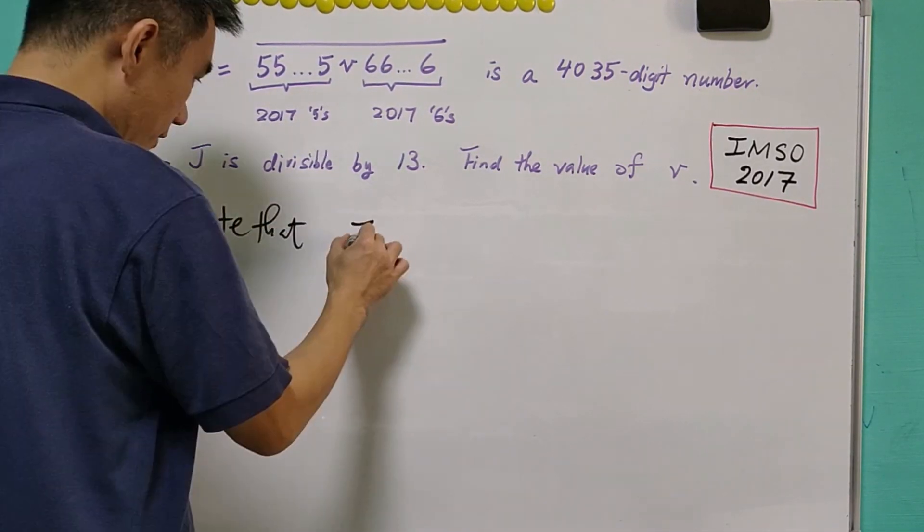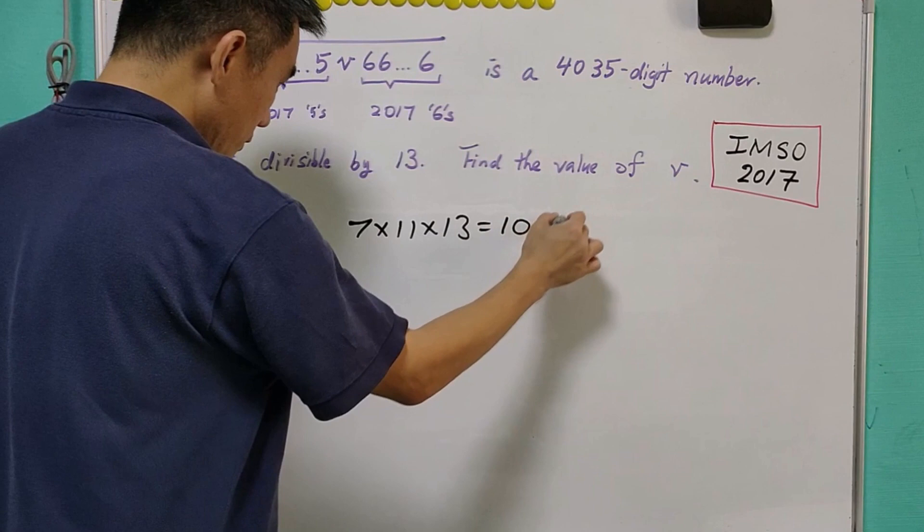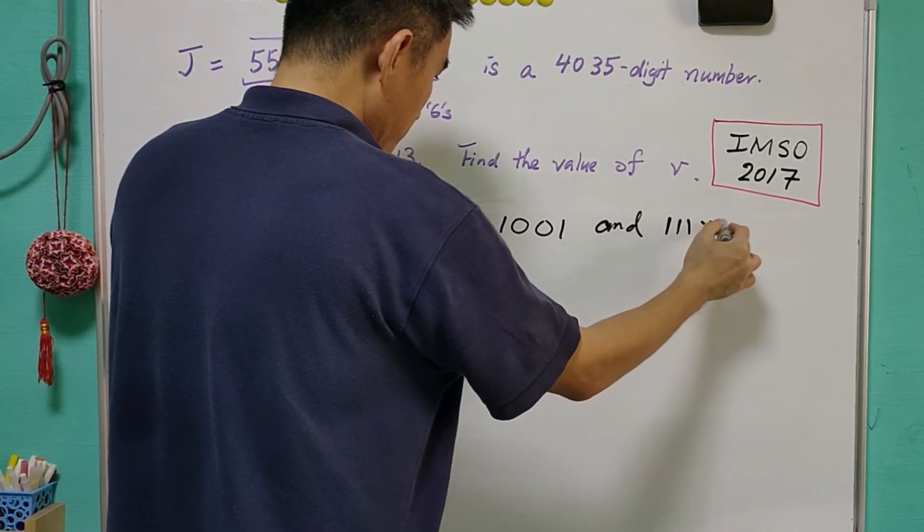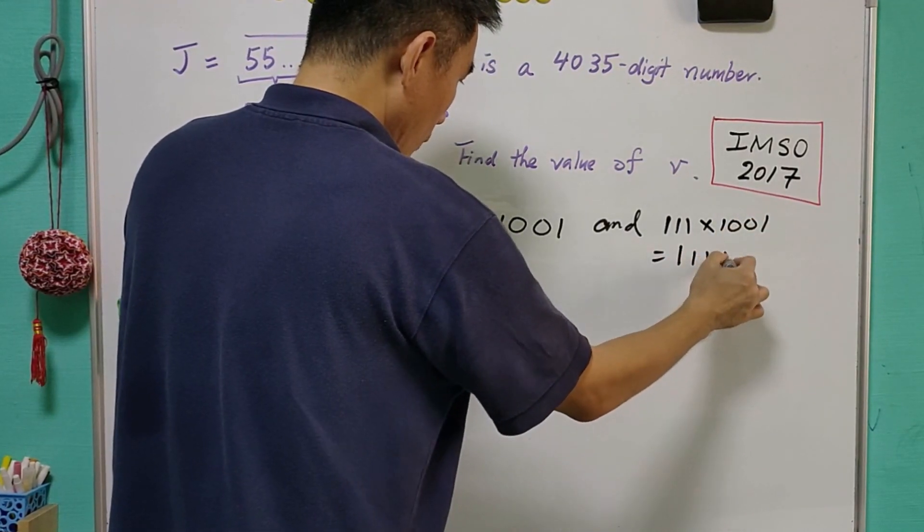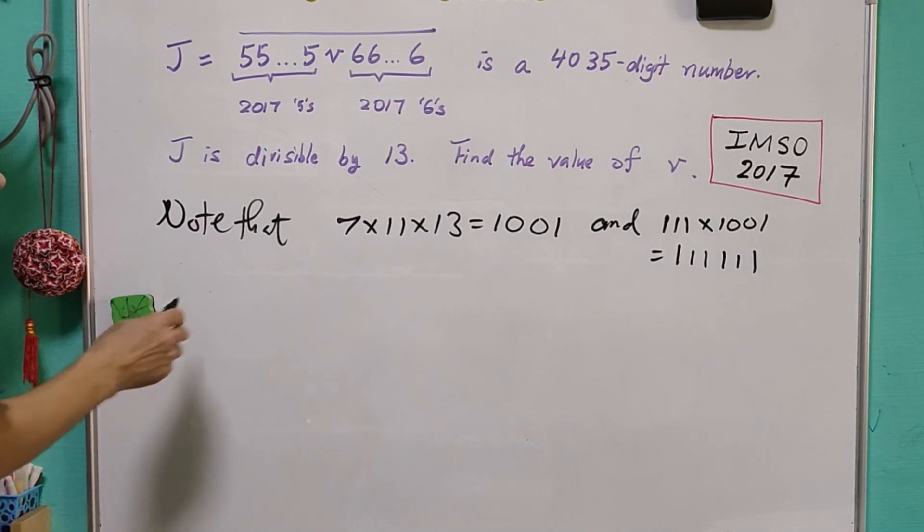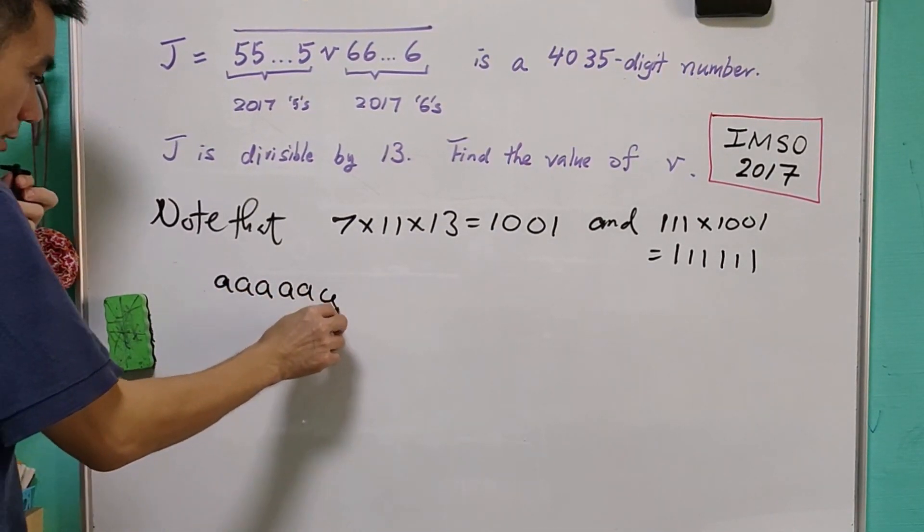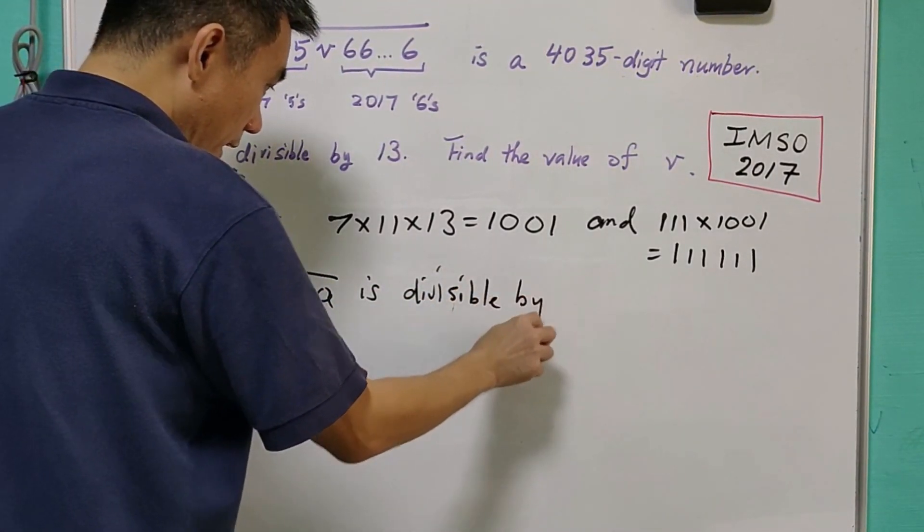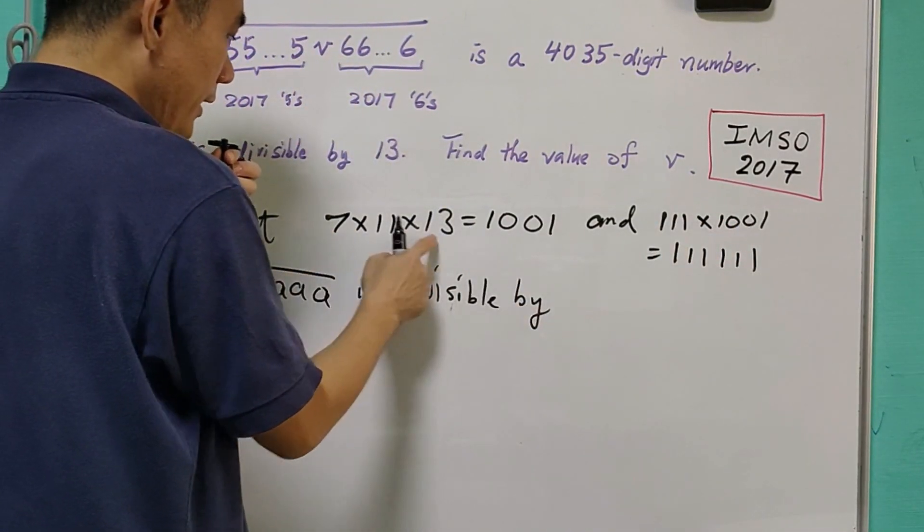Note that 7 times 11 times 13 equals 1001, and 111 times 1001 is equal to 111111. It means that any 6-digit number of the form AAAAAA is divisible by 1001 and hence divisible by 13.